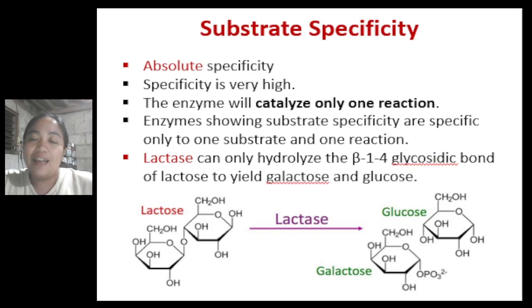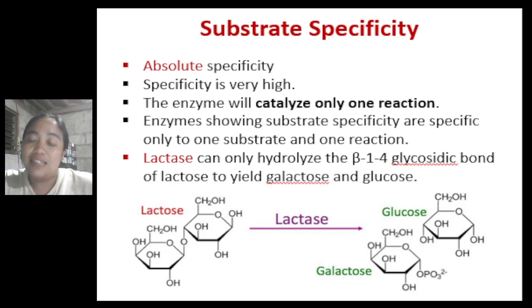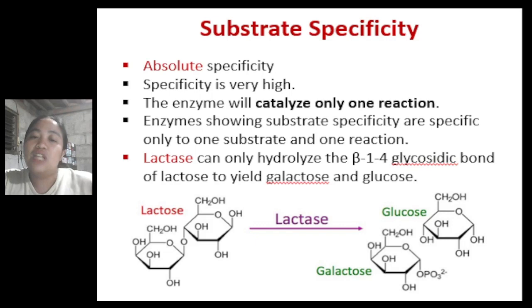The next type is substrate or absolute specificity, which has the very high level of enzyme specificity. This type will only catalyze one reaction with only one substrate. An example is lactase, which can only hydrolyze the beta-1,4 glycosidic bond of lactose to yield galactose and glucose. Another example is urease, used by some plants, fungi, and bacteria, which catalyzes a reaction in which only urea is converted into ammonium and bicarbonate.